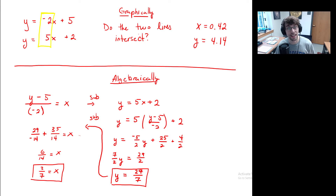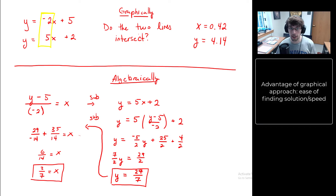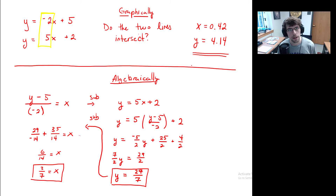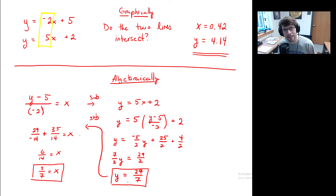Notice how quickly we got the answer graphically compared to algebraically. Graphically we just typed it in — it took all of two minutes, half of which was waiting for the browser to load. The downside is there's no way to look at 4.14 and know it's actually 29/7 — you're doing a numeric approximation. Algebraically it takes longer but the answer is exact. There are tradeoffs.